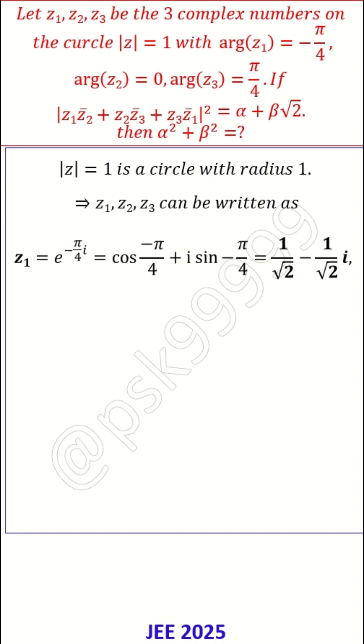Why? Because it is making arg angle of minus pi by 4. So we can write it in the form of minus pi by 4 i because the z radius is 1 unit radius. So this will always give you modulus of z1 as 1 only. This is how we can write z1, z2, z3 in this way.